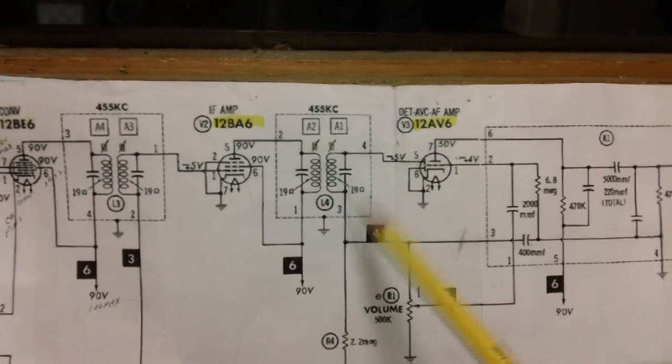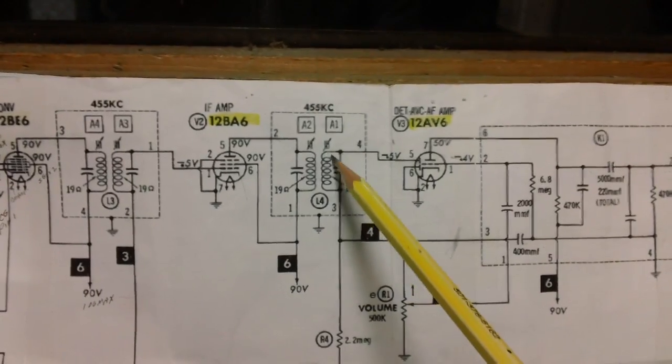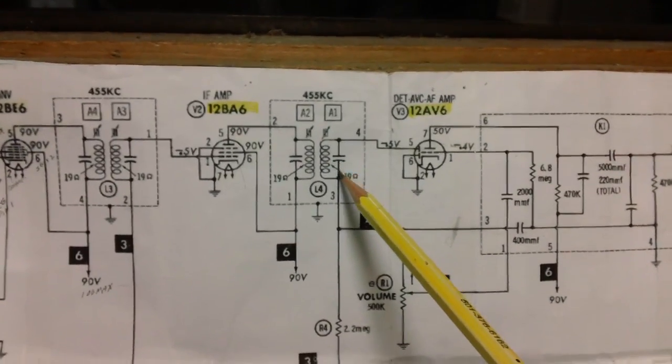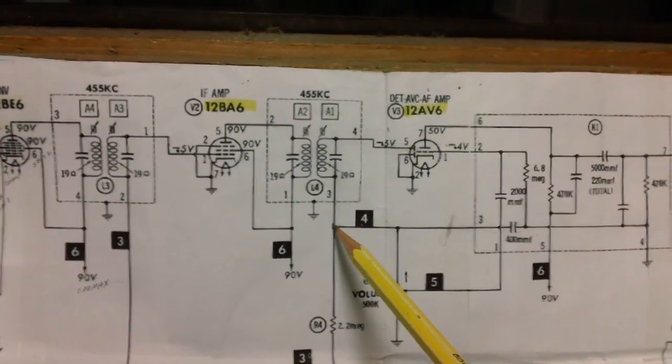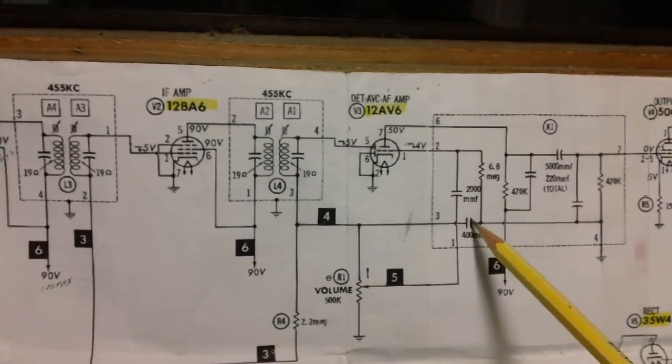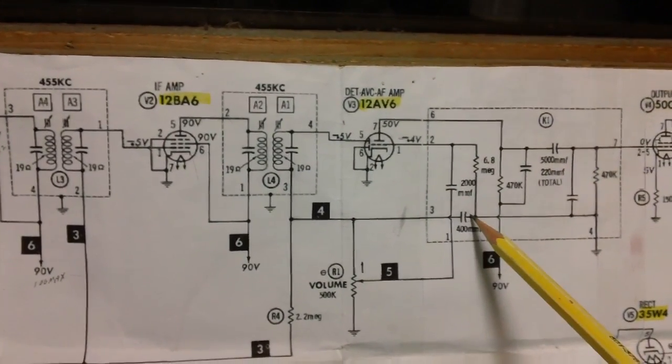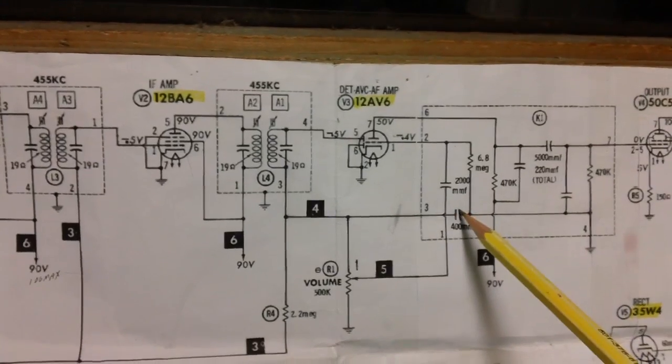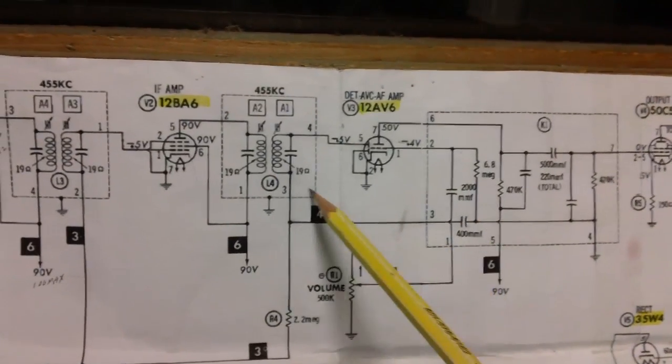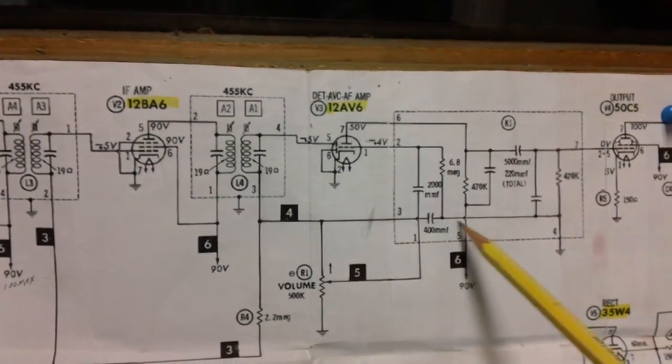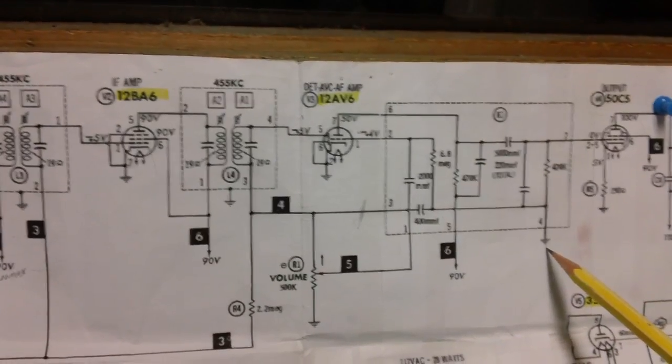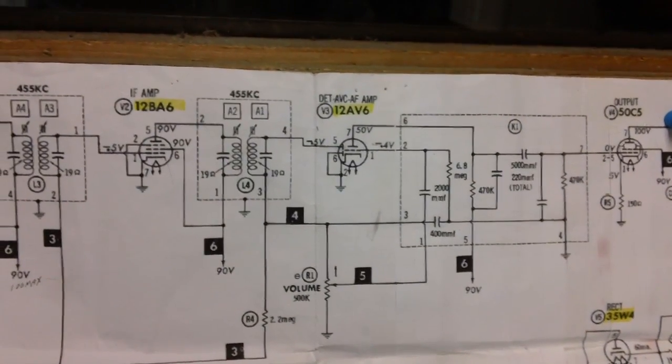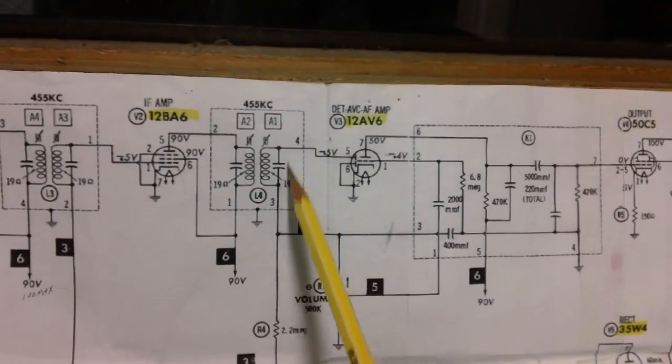And at this point, that carrier, that 455 kilocycles, is eliminated. We don't need it anymore. So it normally comes, gets coupled across, the 455 kilocycles comes down here, rushes through this capacitor because this capacitor was designed to let it go through quickly. Very small capacitor, 400 pF. The carrier comes down, comes across, boom, right to ground. It eliminates the carrier we no longer need. That's a good little thing right there. That capacitor is pretty important.